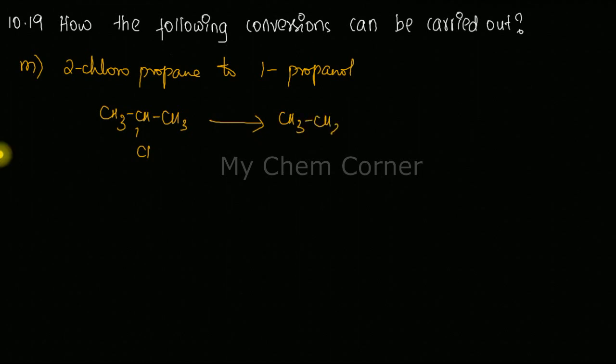Then we have propanol which is CH3 CH2 CH2 OH. To bring about this conversion, we need to eliminate the halogen from this place and introduce OH over here. It's a very simple process.